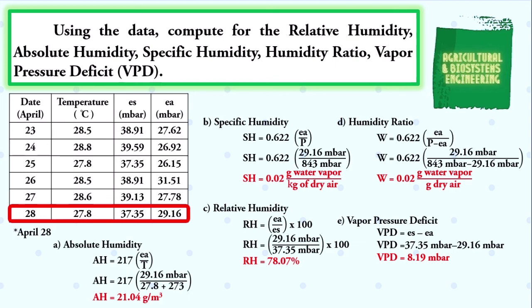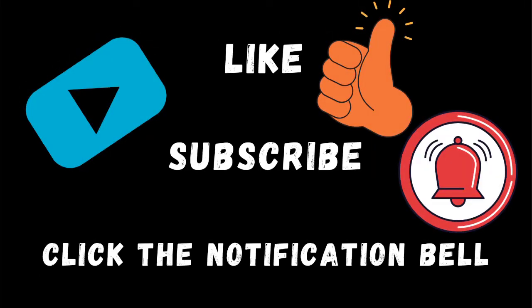That is now the solution for solving the values of relative humidity, absolute humidity, specific humidity, humidity ratio, and the vapor pressure deficit. That is now the solution to our problem. Don't forget to like, subscribe, and click the notification bell before you exit.